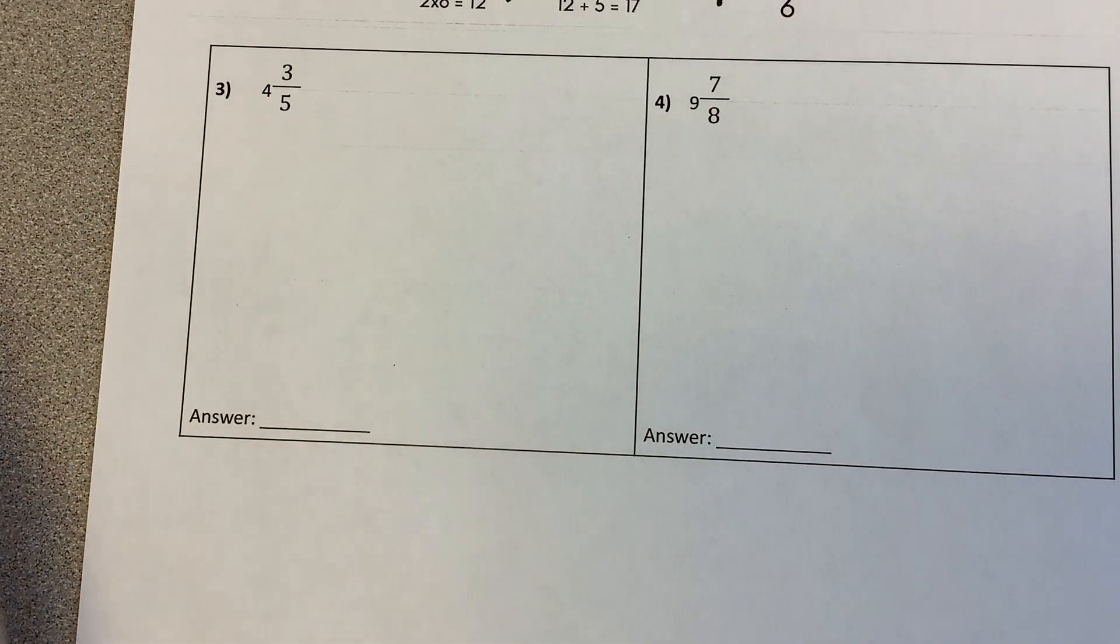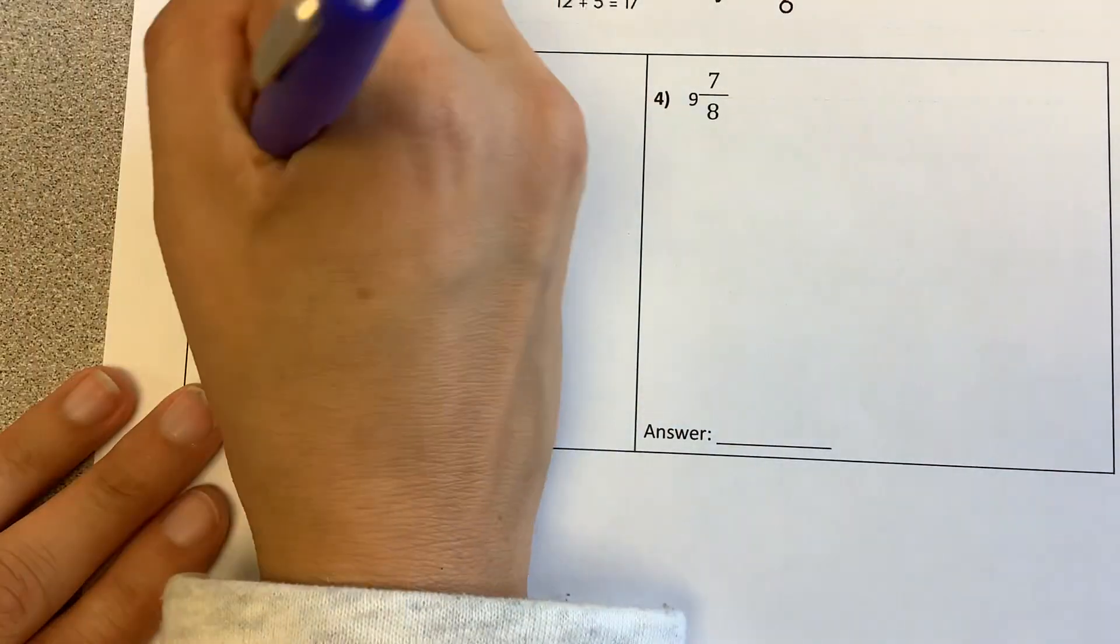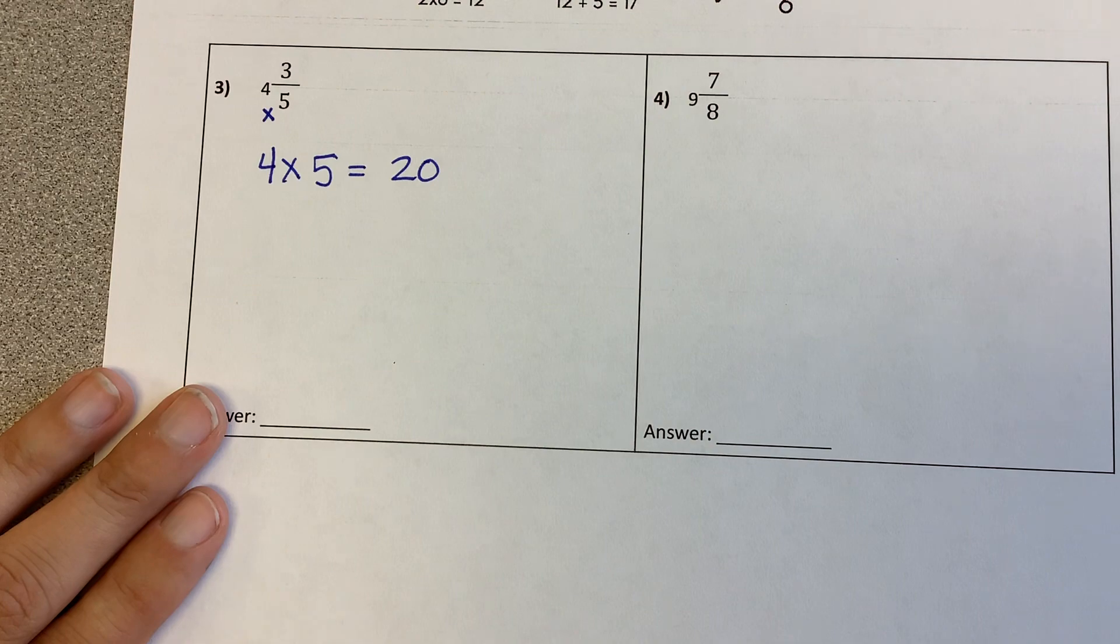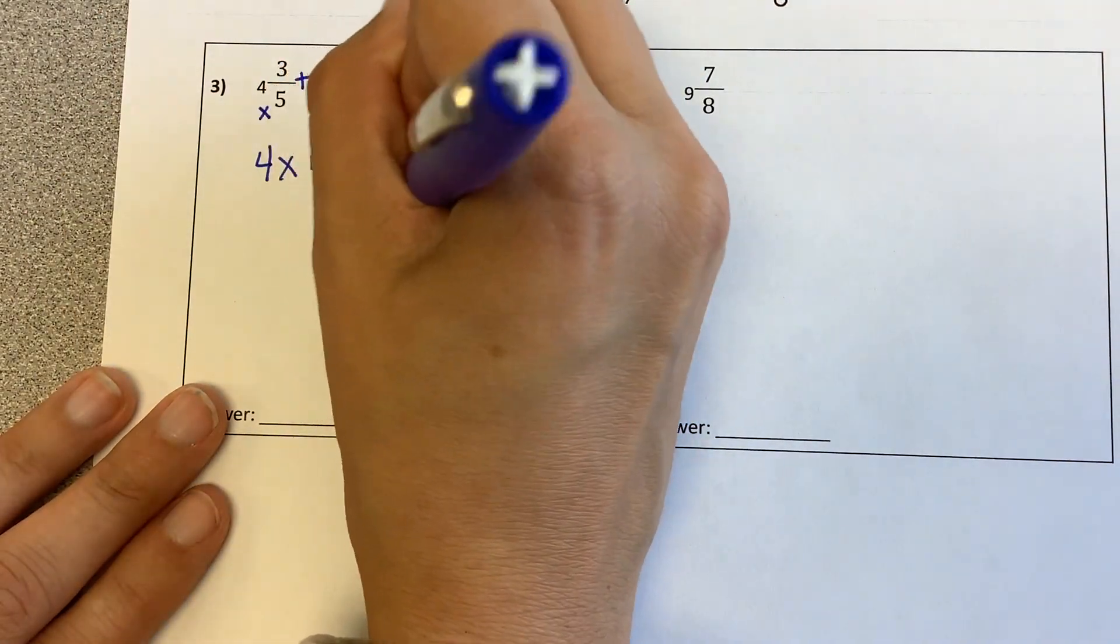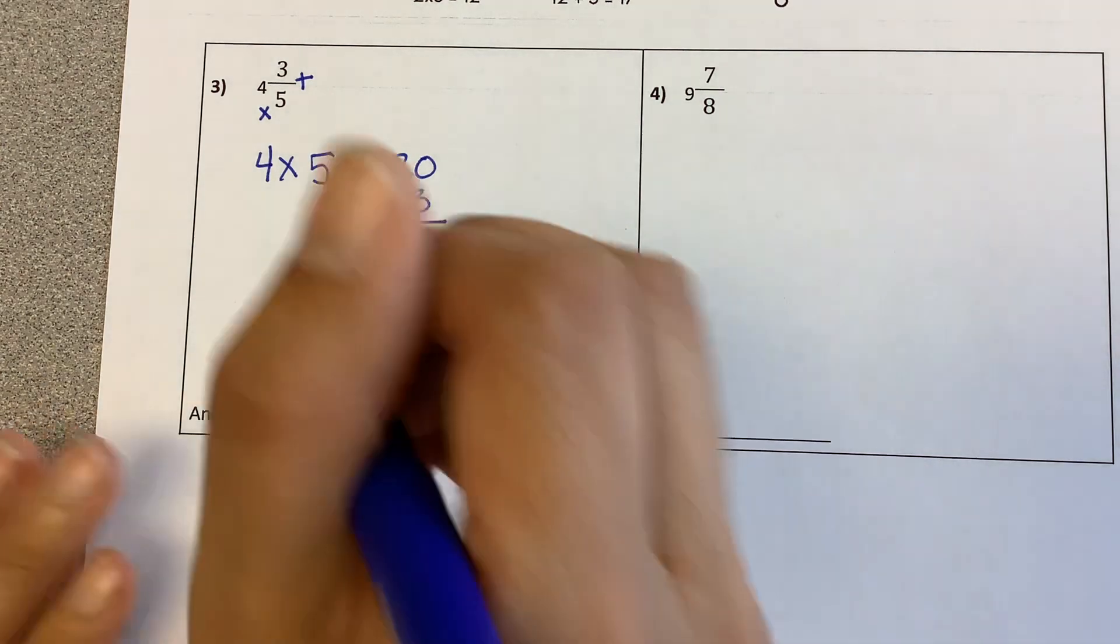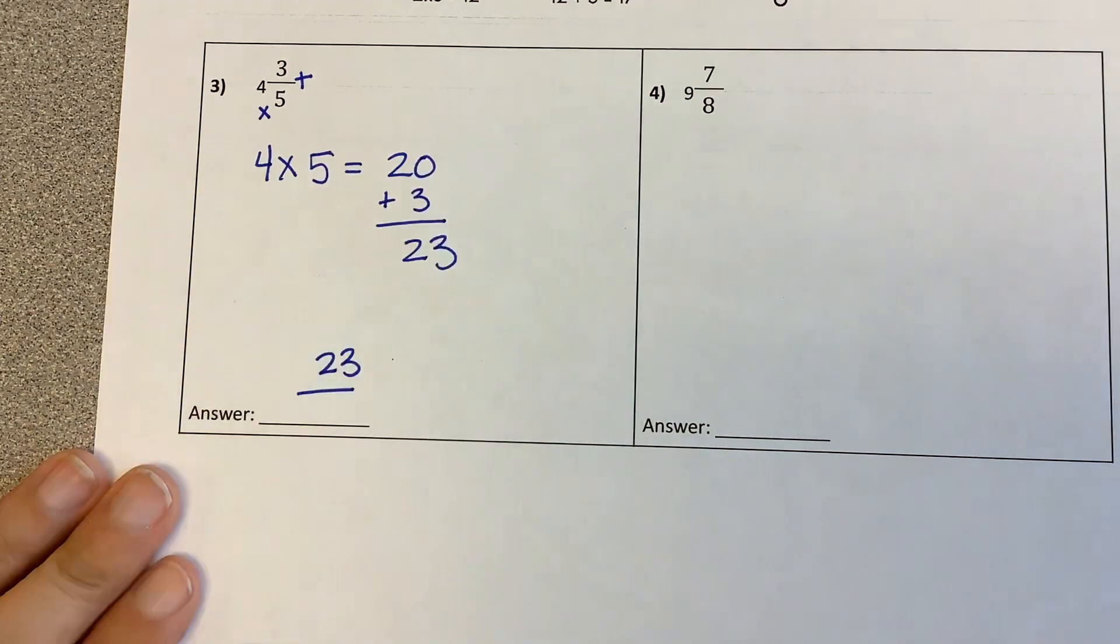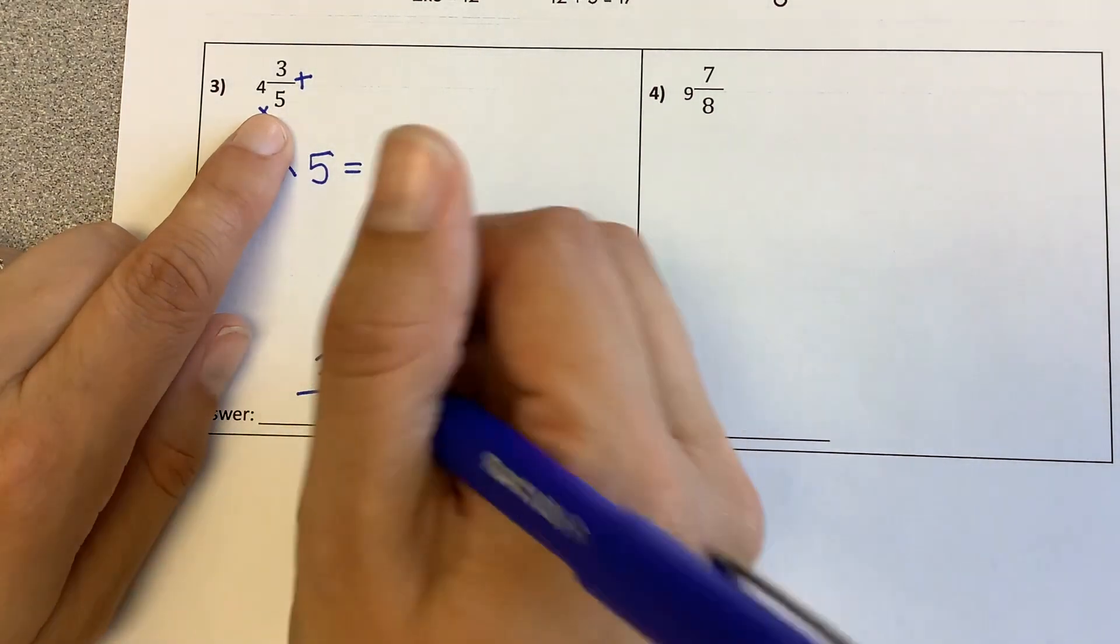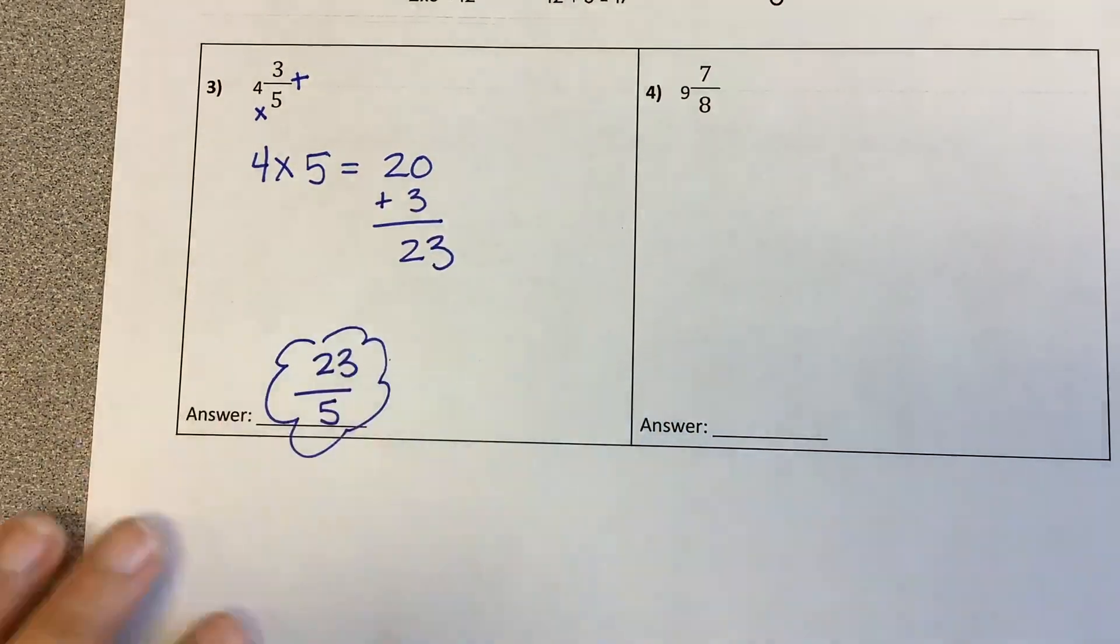So let's try it for 4 and 3 fifths. I'm multiplying 4 times 5, which is 20. I'm adding that numerator of 3. So 20 plus 3 is 23. So now for our fraction, we take that 23 is going to go on top. That's going to be our numerator over, just like for the other problems, the original denominator of 5. So your denominators are always staying the same throughout this.